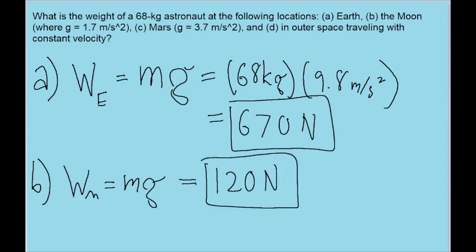Again, a similar process is going to be used for part C, where we're using the weight on Mars, except we're going to use the g value the problem gives us for Mars, 3.7 meters per second squared. And putting that into your calculator, we get about 250 Newtons.